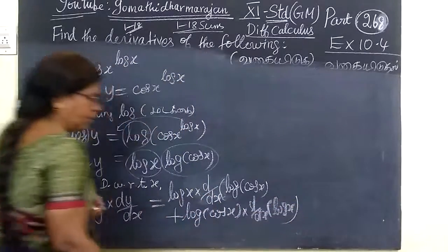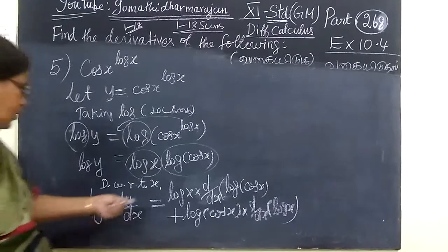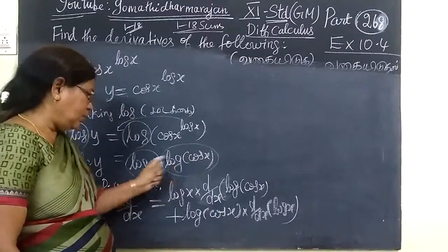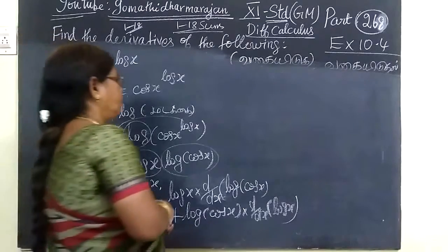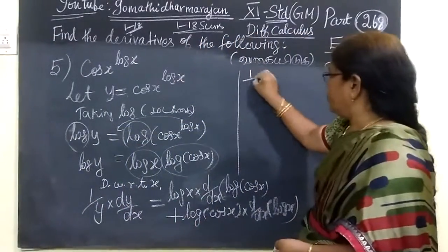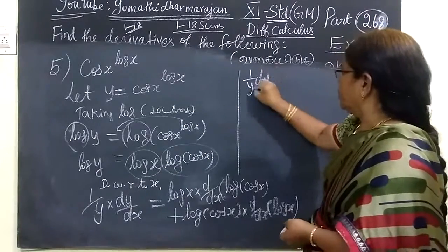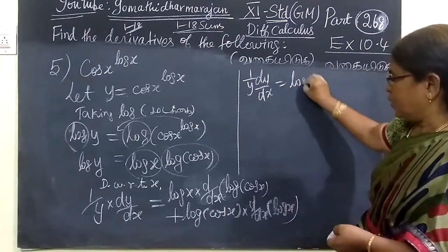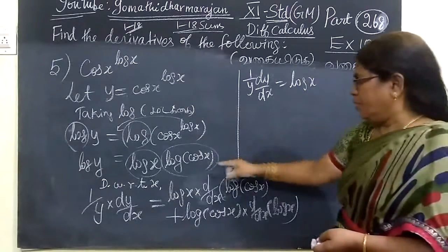So first function into differentiation of second function, plus second function into differentiation of first function. So that's what you write: 1 by Y dy by dx equals.